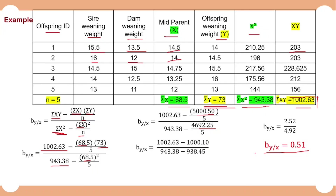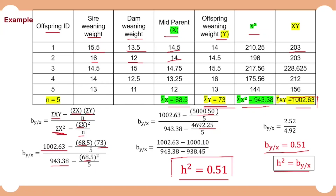The value of heritability is 0.51, equal to our regression coefficient, because we used the midparent value in the regression. That concludes this video. I hope you can now estimate heritability using regression of offspring on midparent. If you liked the video, please share it with your friends, and if you haven't subscribed to my channel, please do subscribe.